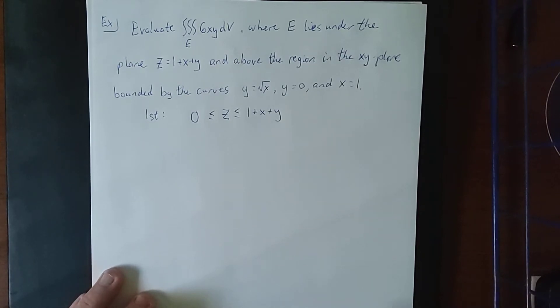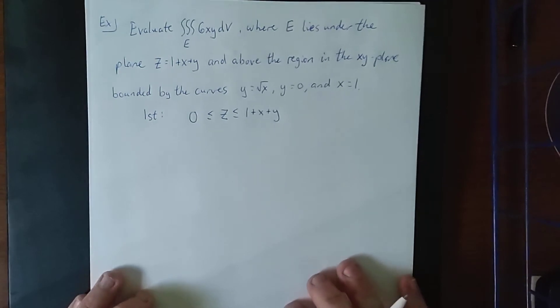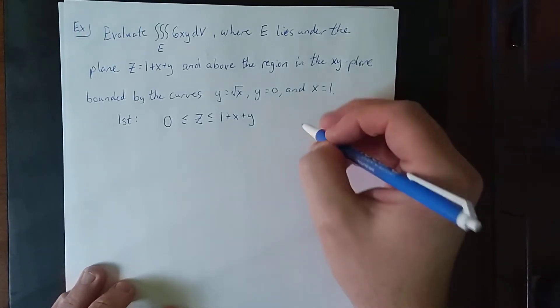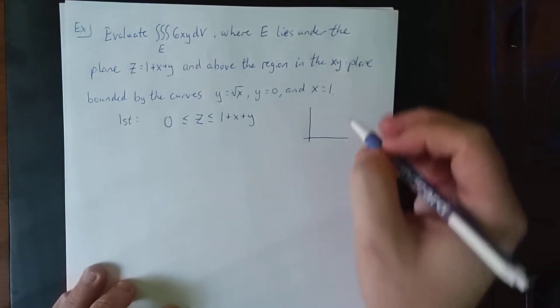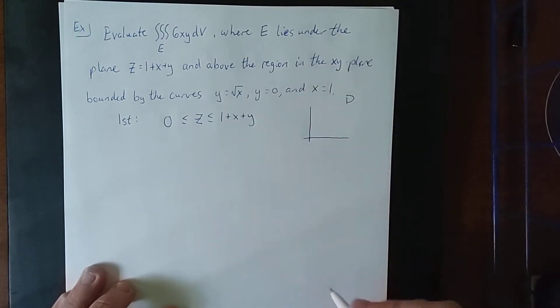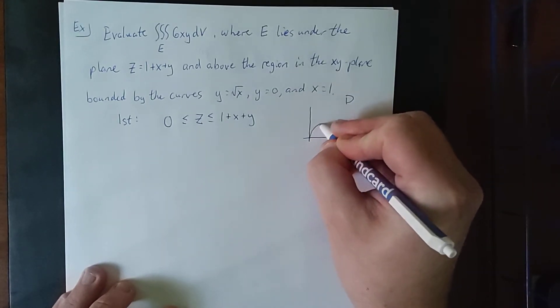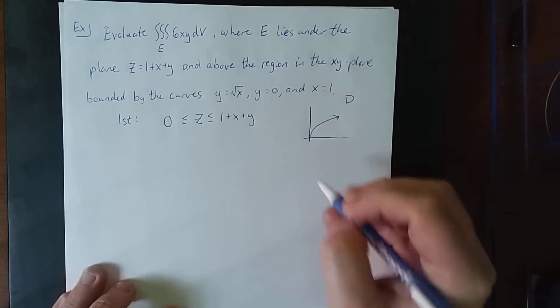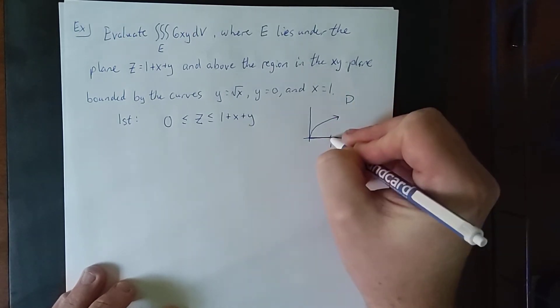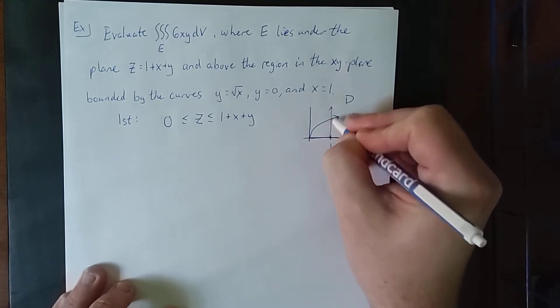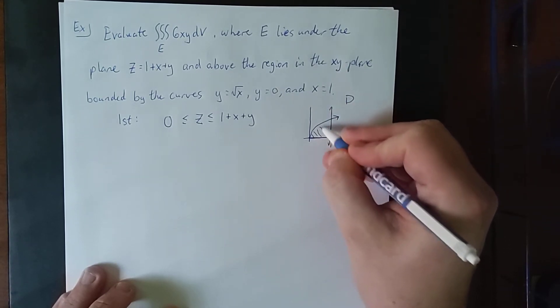Now as far as x and y are concerned, I will figure that out by actually graphing these things and making a decision on whether I want to make that a type 1 region or a type 2 region. So we'll refer to this region as being d. The y equals the square root of x will be the top half of a parabola opening to the right. Y equals 0 will be the x-axis, and x equals 1 will be the vertical line passing through an x intercept of 1. So the region in question would be this one right here.